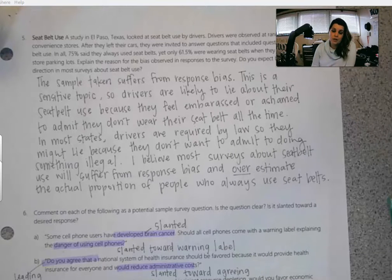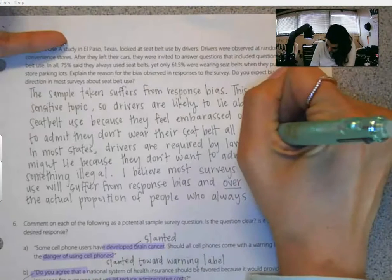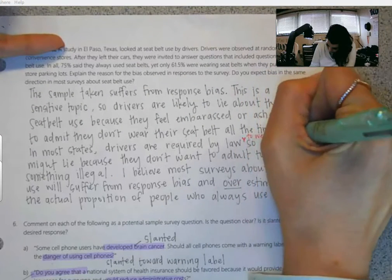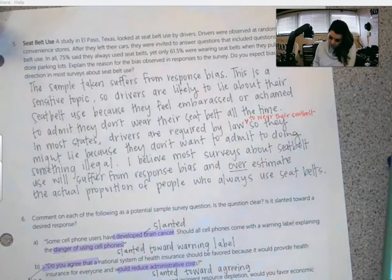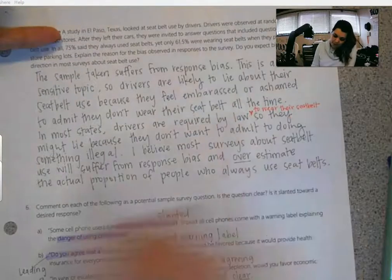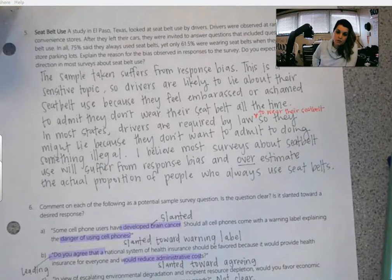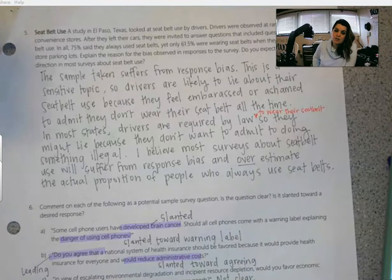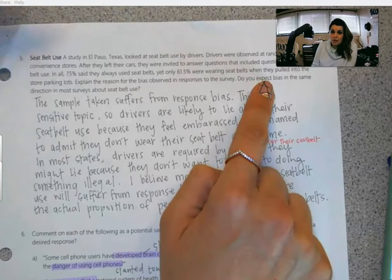In most states, drivers are required by law to wear their seat belt, so they might lie because they don't want to admit to doing something illegal. I believe most surveys about seat belt use will suffer from response bias and overestimate the actual proportion of people who always use seat belts. Would I expect bias in the same direction in most surveys about seat belt use? Yes, for sure.